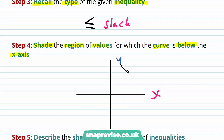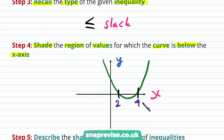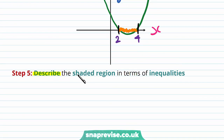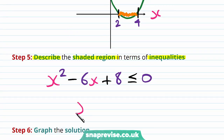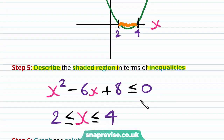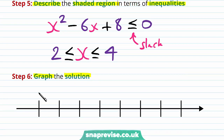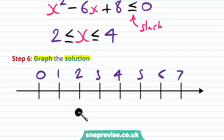Our fourth step is to shade the region where the curve is below the x-axis — this occurs between x = 2 and x = 4. Our fifth step: since x² - 6x + 8 ≤ 0 and the inequality is slack, x is between 2 and 4 inclusive. Our last step is to graph the solution: filled circles at 2 and 4 with a line between them on the number line.